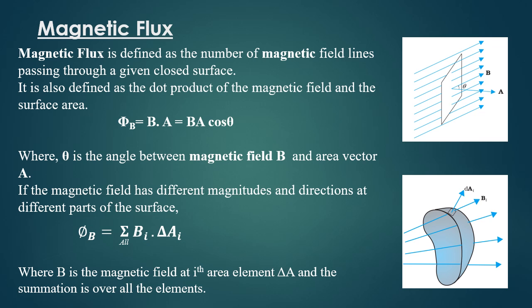Area vector A is equal to the product of A and n kappa, which is a unit vector along the normal to the surface.